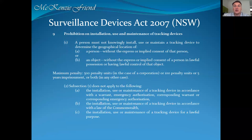The prohibition on installation and use of tracking devices is also a difficult area. I've had a little bit of experience dealing with matters where a party has used a tracking device. A person must not knowingly install, use or maintain a tracking device to determine the geographical location of a person without the express or implied consent of that person. In the matter I have some association with, one party placed a tracking device on the other parent's car, and also put a tracking device inside a child's toy. The reason this parent did this is because orders were made restraining that parent from travelling to certain geographical locations.